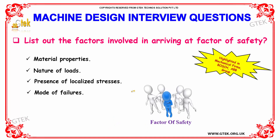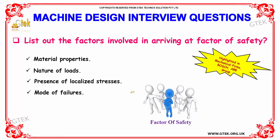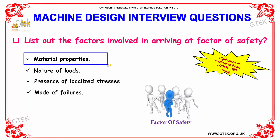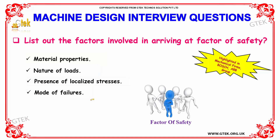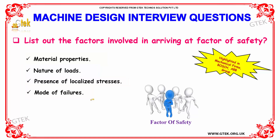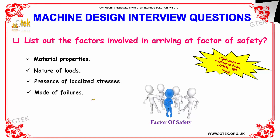List out the factors involved in arriving at the factor of safety. The factors are: material properties, nature of loads, presence of localized stresses, and mode of failures.